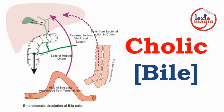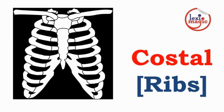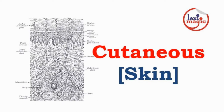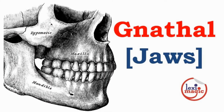Colic refers to bile. Celiac refers to the abdomen. Costal refers to the ribs. Cutaneous refers to the skin. Enteral refers to the intestine. Gnathal refers to the jaws.